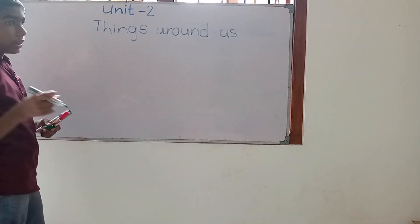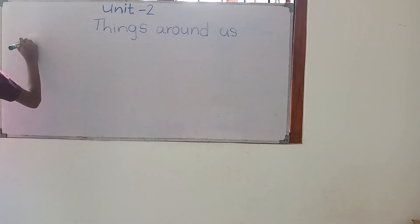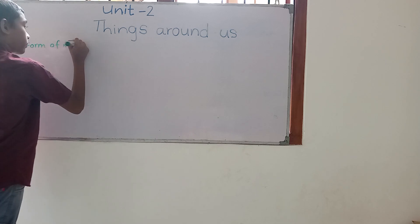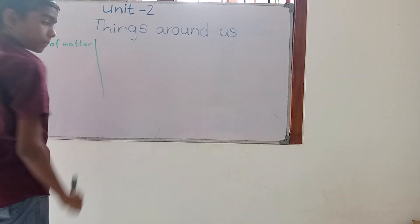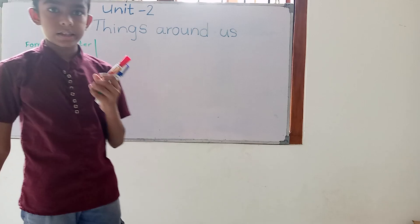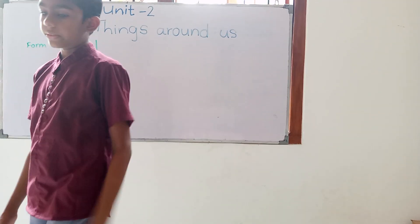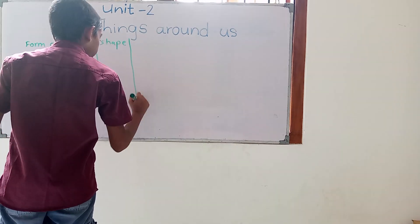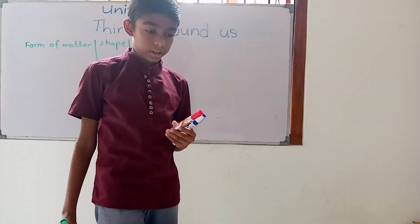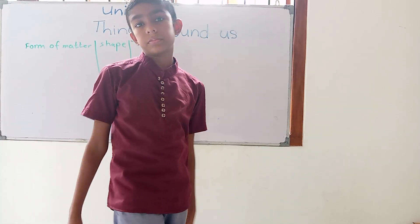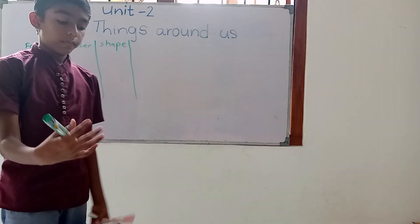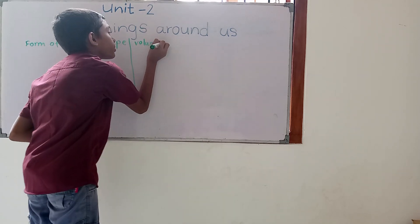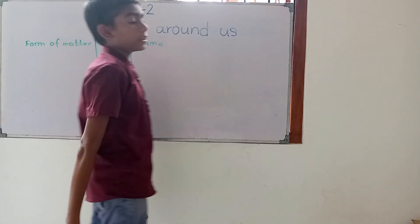Now let us take the table for comparing. There is this table. What is the form of matter? Form of matter is solid, liquid, or gas. What is the shape? It is asking: does it have a definite shape and volume? You may wonder what volume means — it is asking: does it have a definite volume?